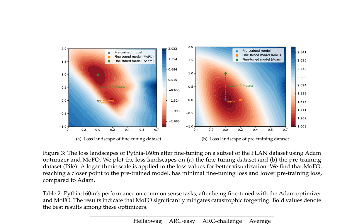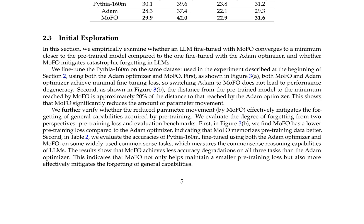MoFo utilizes a momentum-based optimization method with a filtering strategy to select the top alpha percent of gradients for updating model parameters, reducing noise and promoting a more stable optimization process. The authors demonstrate MoFo's effectiveness by comparing it with the Adam optimizer on various commonsense tasks and pre-training loss landscapes. Experimental results are presented for instruction fine-tuning and continual fine-tuning using LLaMA-2 7B and TinyLLaMA-1.1B, using datasets such as MetaMathQA and Code Alpaca covering mathematical reasoning and code generation.